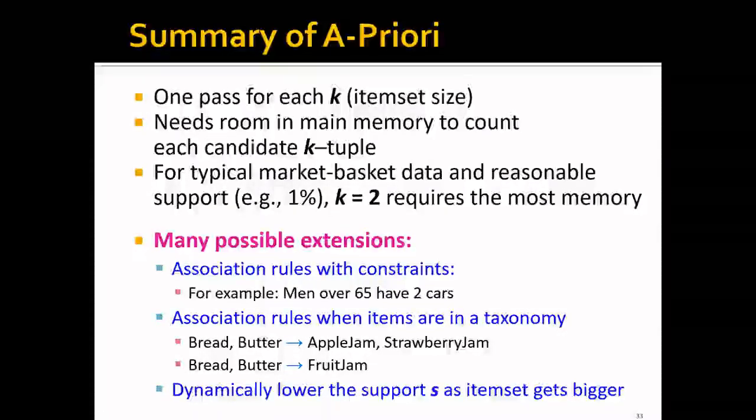And another example is that you might be only interested in association rules when the items are in a taxonomy. For example, we have two association rules. One is from bread and butter to apple jam and strawberry jam, and the other is bread and butter to fruit jam. And you can see that this fruit jam is actually including apple jam and strawberry jam.